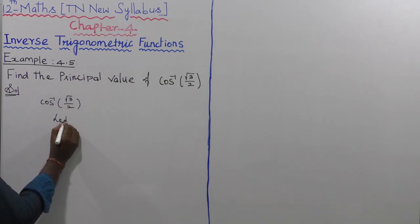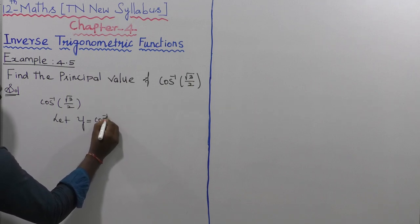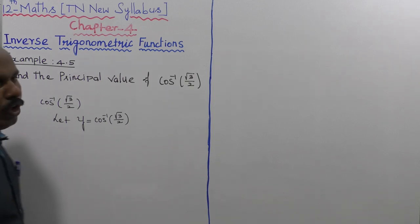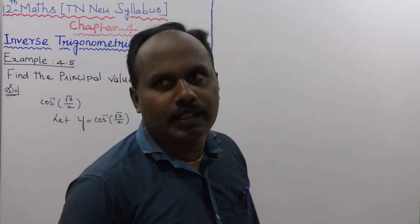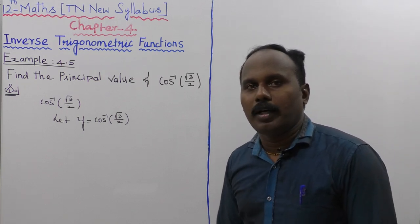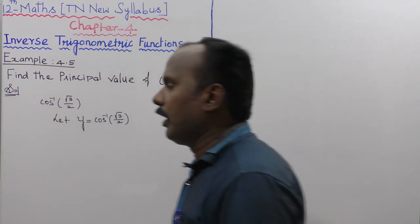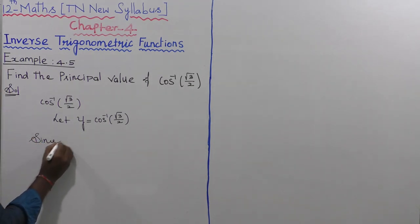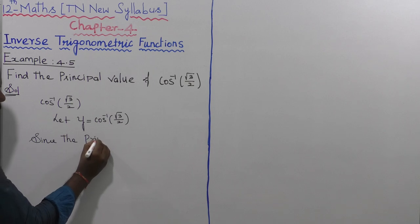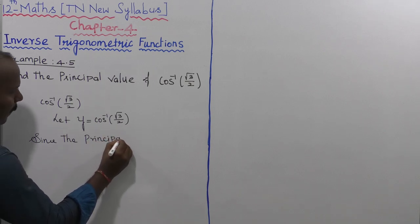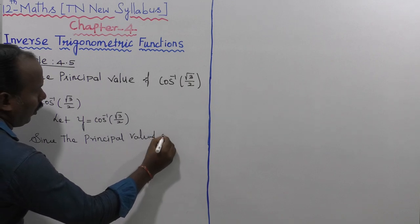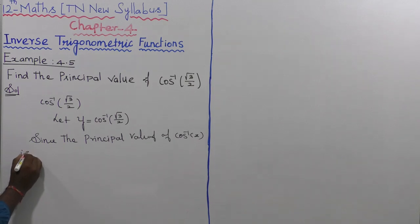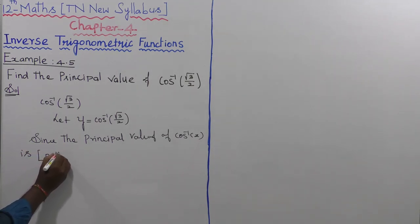Let us consider y equal to cos inverse of root 3 divided by 2. The principal value of cos inverse of x is the closed interval 0 to π. We know that the principal value of cos inverse of x is the closed interval 0 to π.